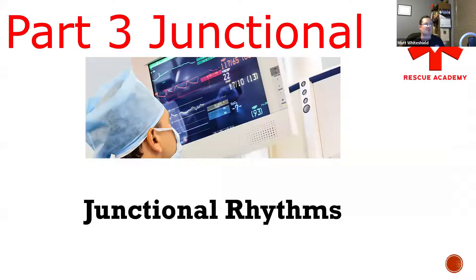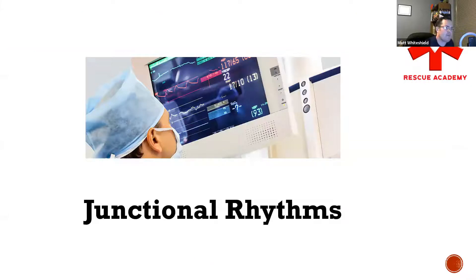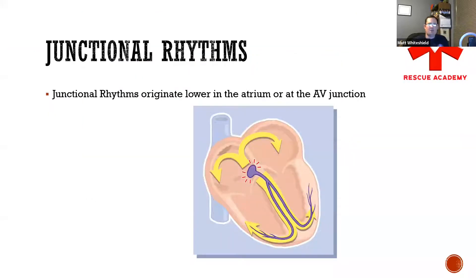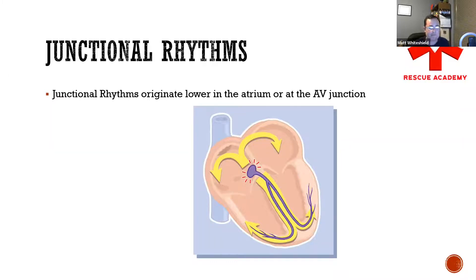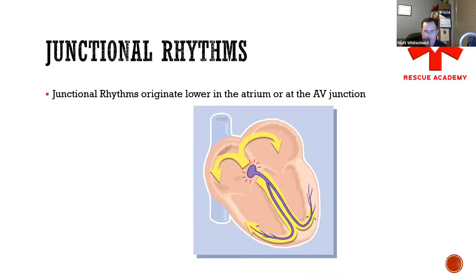Let's talk about junctional rhythms. A junctional rhythm is a rhythm that originates below the atrium. We know that the atrium has the SA node, and that's what creates the P-wave. A junctional rhythm starts below that, meaning there's going to be no P-wave.